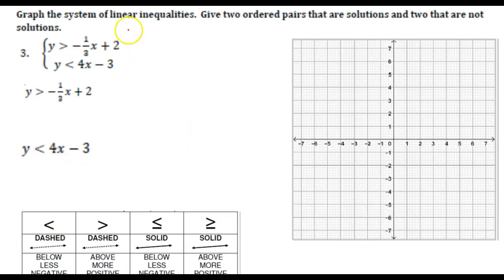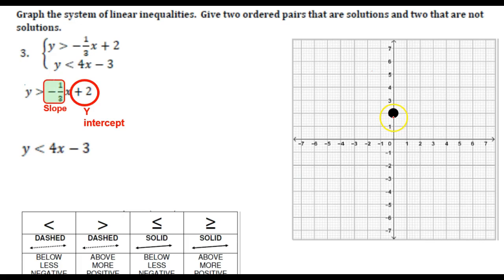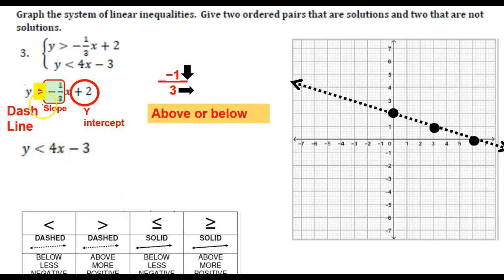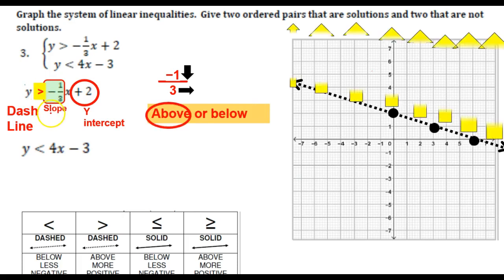Alright, number 3. Again, they're both solved out for y, which is awesome, so we can just start graphing. First things first, go ahead on your y-axis and look for positive 2. Let's look at our slope — our slope is negative 1 over 3. So if it's negative 1 over 3, we're going to go down 1 and over 3. Down 1 and over 3. And since our symbol is this, are we going to dash or solid our line? We're going to dash it, right? And since that is still my symbol, am I going to shade above or below? Above, right.